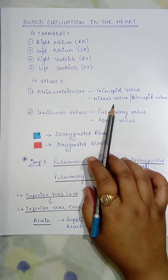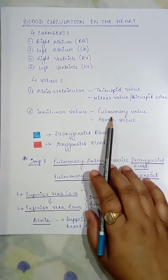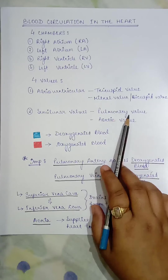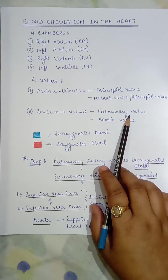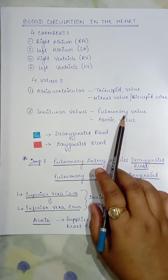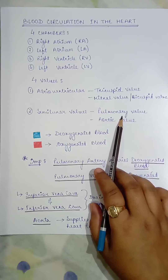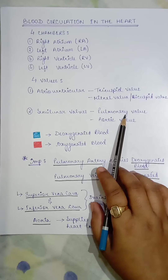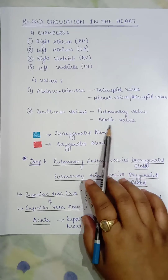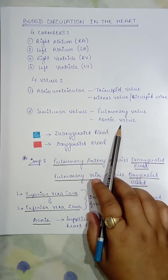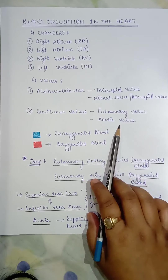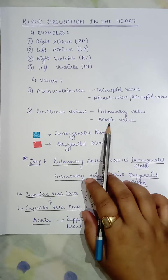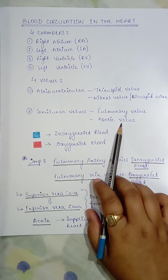For the semilunar valves, the pulmonary artery takes deoxygenated blood to the lungs, and at the beginning of that artery we find the pulmonary valve. There is also an aortic valve at the aorta, which takes oxygenated blood from the heart to the body.